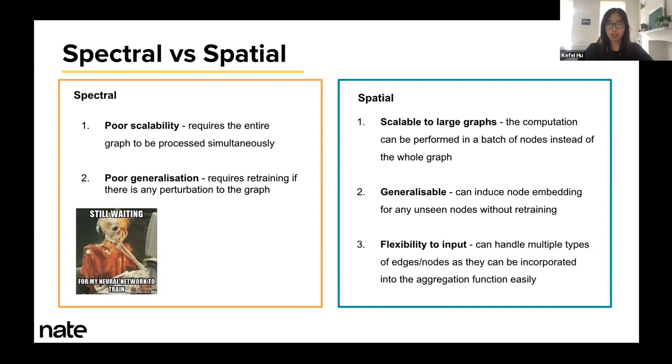Whereas spatial, on the other hand, can be generalized to unseen graphs quite easily because the aggregator weights can induce the embedding of unseen nodes based on the structure. On top of that, spatial-based models are flexible. They can handle graphs with different structures, like graphs with multiple edge or node types, because these variations of the graph input can be incorporated into the aggregation function.